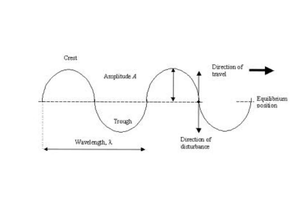The easiest way of remembering this is: if you were at sea on a small boat, the boat would go up and down even though the wave is travelling across, and the relationship between you going up and down and the wave going across is 90 degrees.